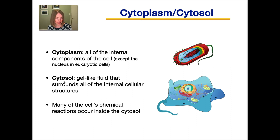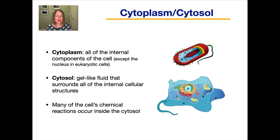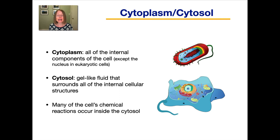The cytosol, on the other hand, is the gel-like fluid that surrounds all of the internal cellular structures. In prokaryotic cells, there isn't really much to distinguish the cytoplasm and the cytosol. But in eukaryotic cells, just this gel-like fluid that surrounds all of those other structures is the cytosol, whereas the cytoplasm includes those structures. The cytosol is very important to the cell — it is where many of the cell's chemical reactions occur.